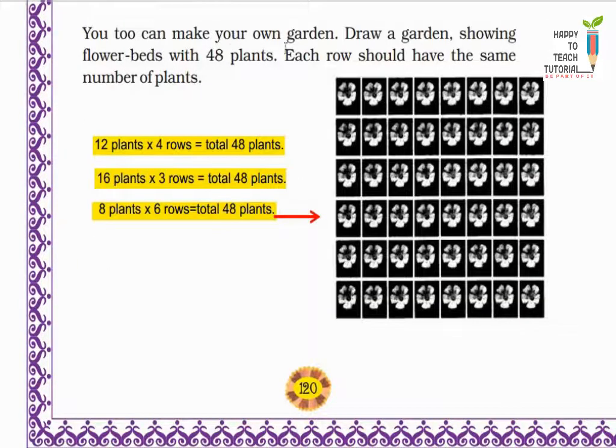Next, you too can make your own garden. Draw a garden showing flower beds with 48 plants. Each row should have the same number of plants. There are so many ways to show the flower beds with 48 plants. First, you can show 4 rows with 12 plants each, is equal to 48 plants. Next, you can show 3 rows with 16 plants each. So 16 into 3 is equal to 48 plants. Next is 8 plants with 6 rows. So this way you can show flower beds with 48 plants.